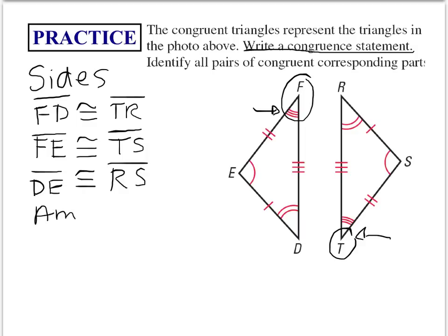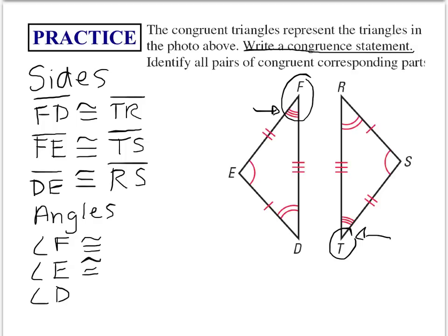Now for the angles — we have three angles on each triangle. Writing the congruency statements: angle F is congruent to angle T, angle E is congruent to angle S, and angle D is congruent to angle R.